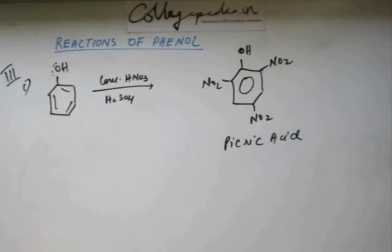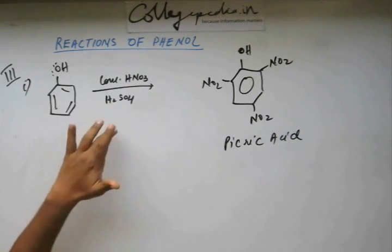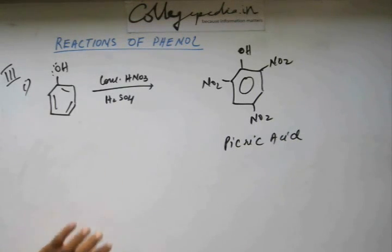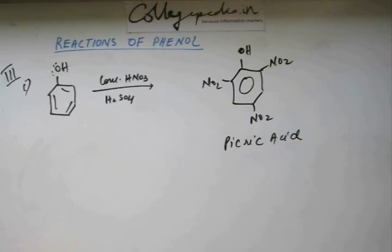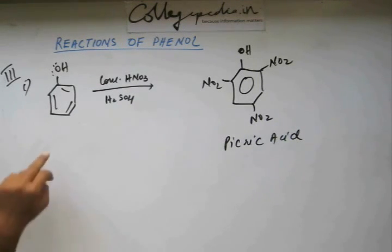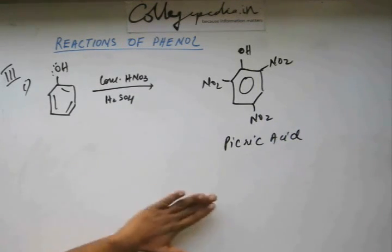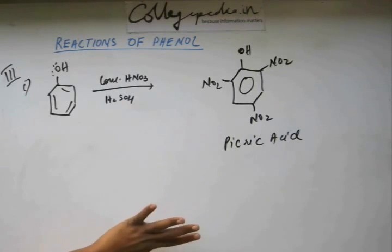Picric acid is an important compound — know this name. So if you carry out nitration, if you add nitrating mixture at high concentration — if you add concentrated nitric acid and sulfuric acid on phenol — you are going to get picric acid.